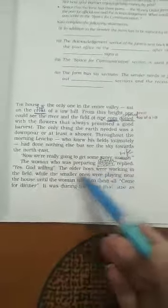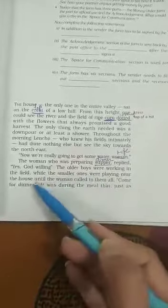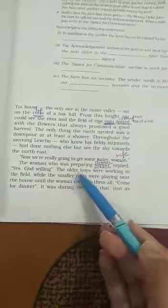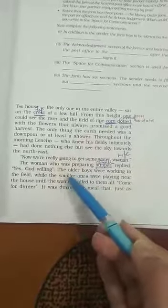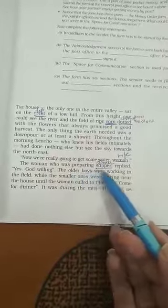The older boys were working in the field while the smaller ones were playing near the house. Here, older and smaller boys are children of Lancho. The younger children were playing and the older were working in the field.